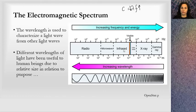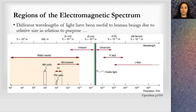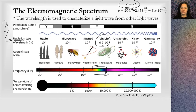So the wavelength is used to characterize light from other light waves. We distinguish a radio wave different from a microwave, different from infrared or ultraviolet. And the different wavelengths of light have been useful to humans in different ways in relation to their size. So if we go back to the previous, you can see radio waves. It's about the size of buildings. And that's where we want radio waves to go, around buildings.